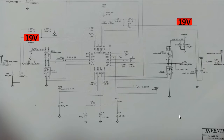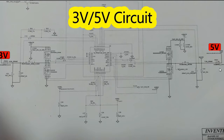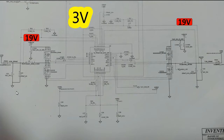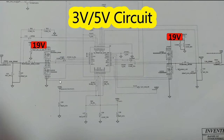Let's look at the animation again — we have the 3V and 5V circuit. From 19V we get 5V and 3V. Here we have 19 volts in the drain of this MOSFET, and also 19 volts in the drain of this MOSFET. This is the five volt channel and over here we have the three volt channel.